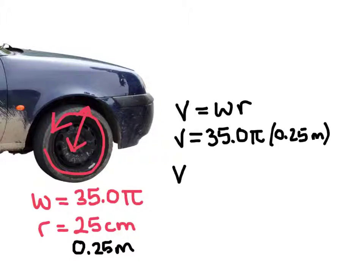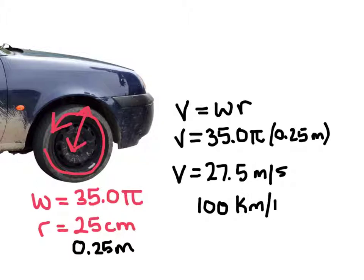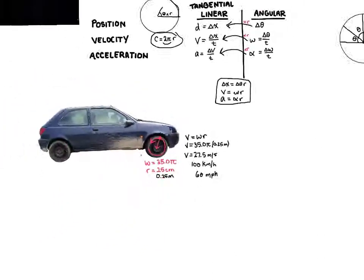We get a velocity of 27.5 meters per second. And that's roughly about 100 kilometers per hour, which is basically highway speed. In other words, 60 miles per hour. And that is circular motion.